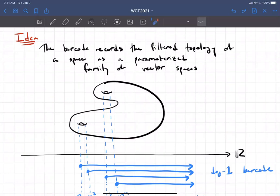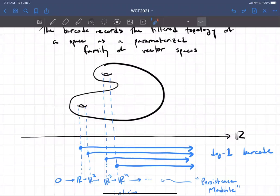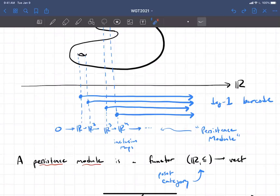So how are we going to do that? The barcode records this filter topology. You can think of it as a parametrized family of vector spaces. So I can think of this barcode, say we have the degree one barcode, which tracks the life of degree one homological features. Moving left to right now, I've turned the picture on its side. So at each parameter value I'm getting a vector space. And beyond that, it's not just the vector spaces, but I'm getting linear maps between the vector spaces at each time. This is what's called a persistence module.